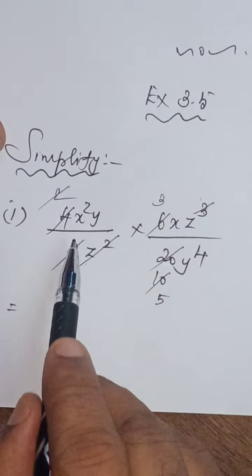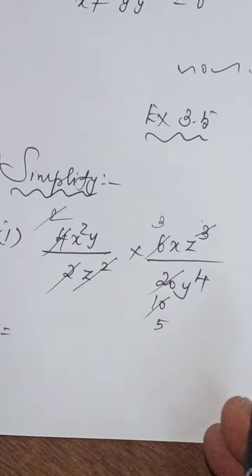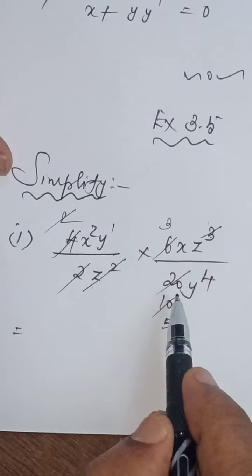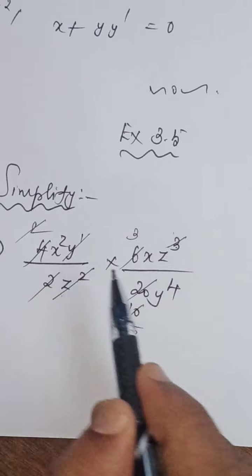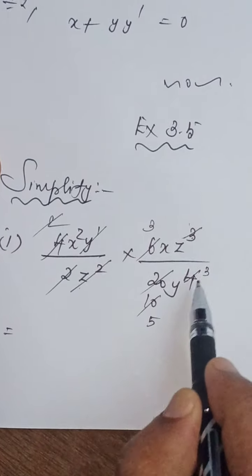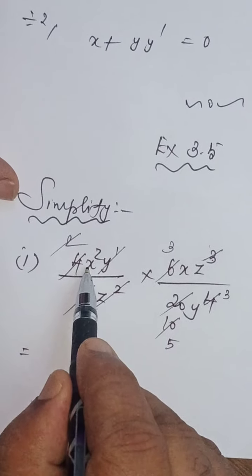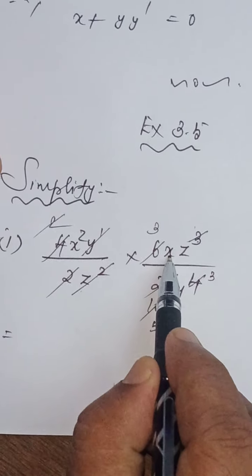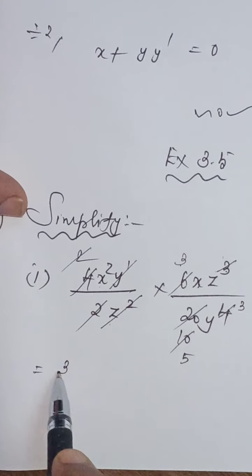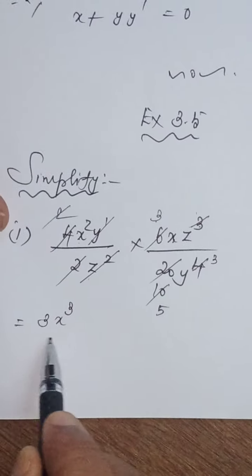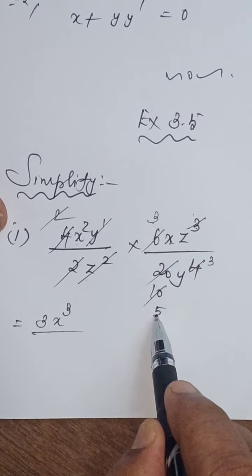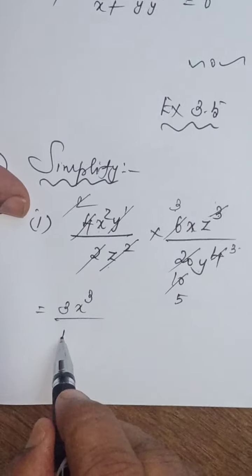Then here y — y power 4 — the y means y power 1. As already told, division means you have to subtract the powers. So y power 1 gets cancelled: 4 minus 1 equals 3, so you will be getting y cubed. So final answer: x squared is there, here x is there — x squared and x — x cubed. Before that you have to write number 3: 3x cubed divided by 5y cubed.